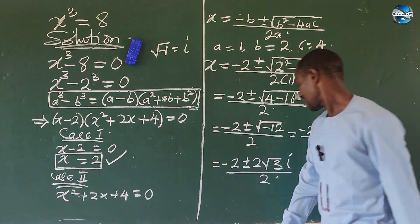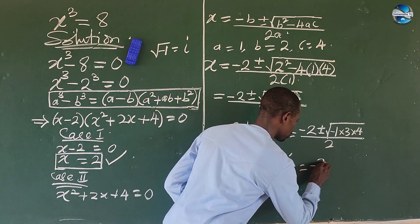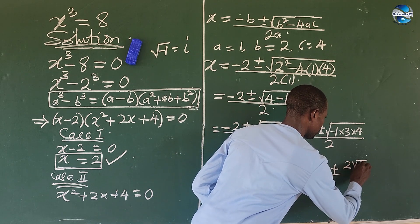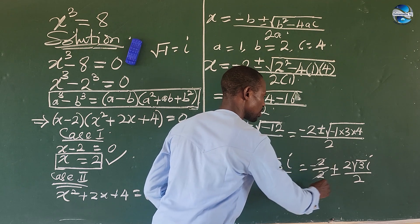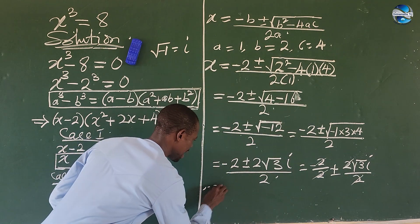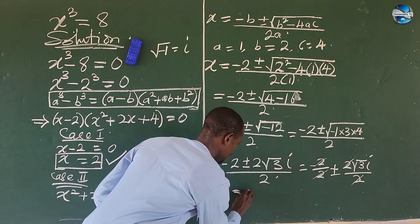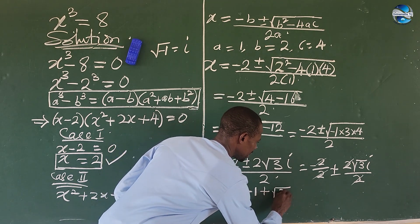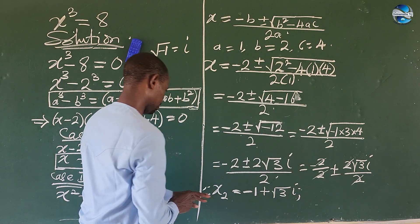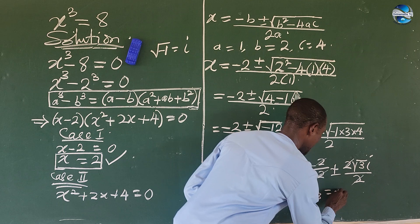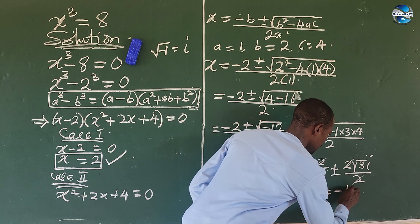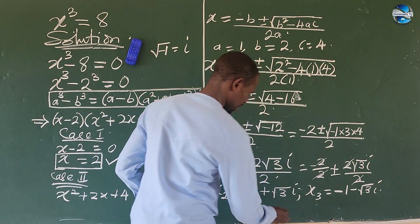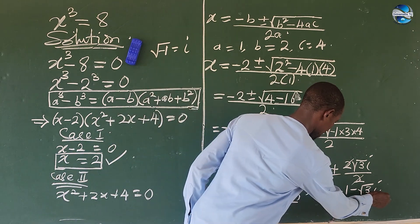What do we do next? So we can rewrite this expression here. This will now give us -2/2 ± 2√3·i/2. Cancel, cancel 1, 1. So we now end up having x₂ = -1 + √3·i, and x₃ = -1 - √3·i. So we have our x₁ here, so this is our x₂ and this is our x₃.